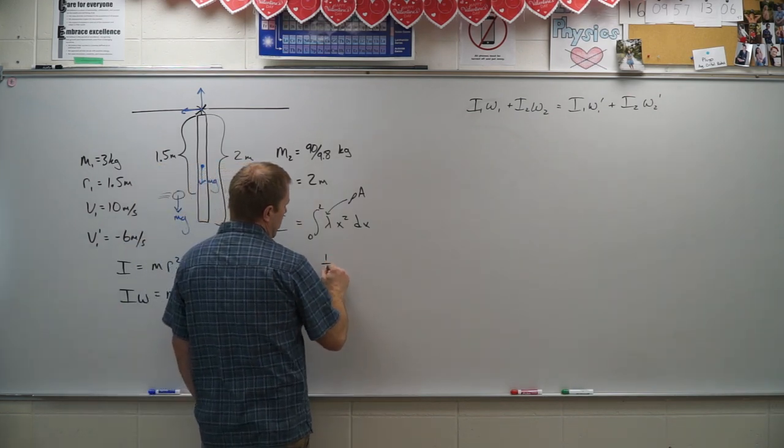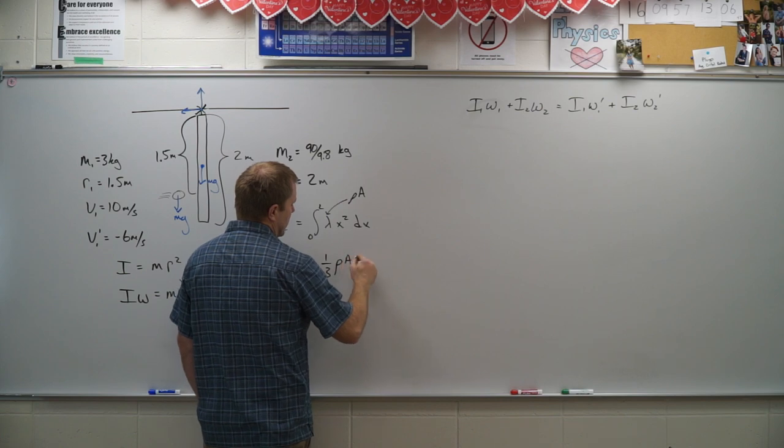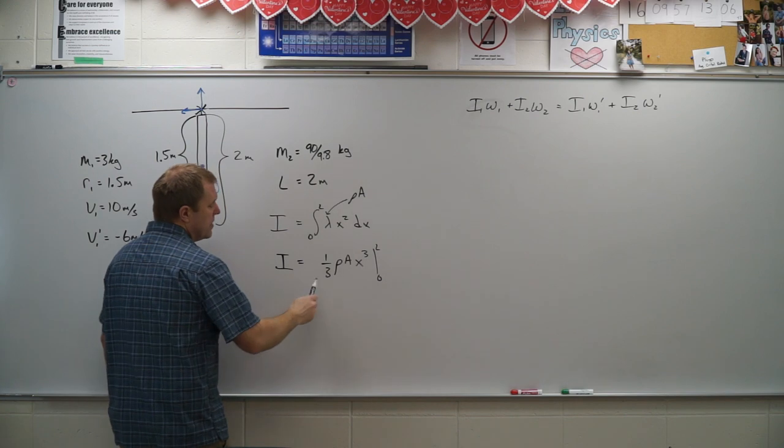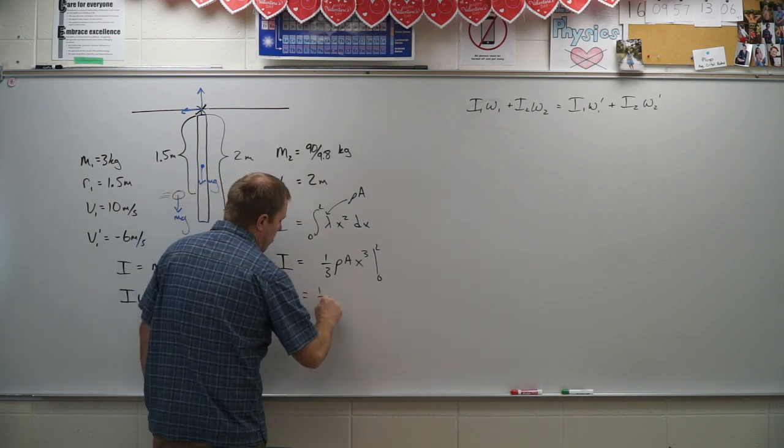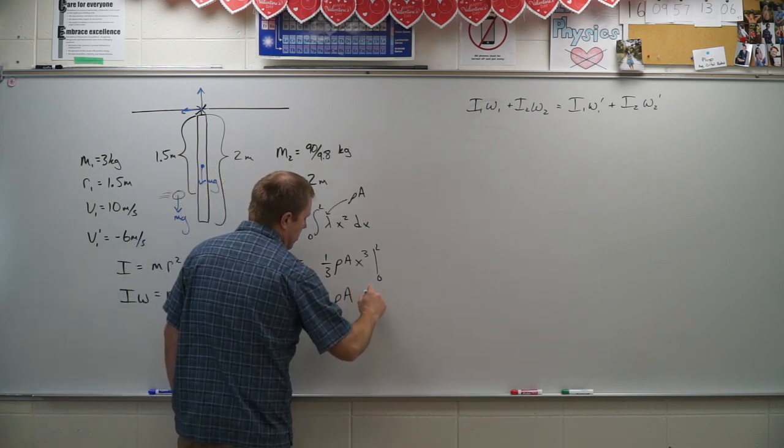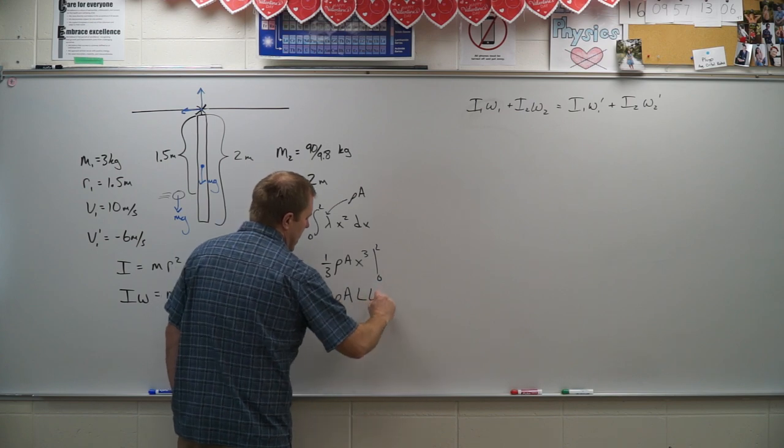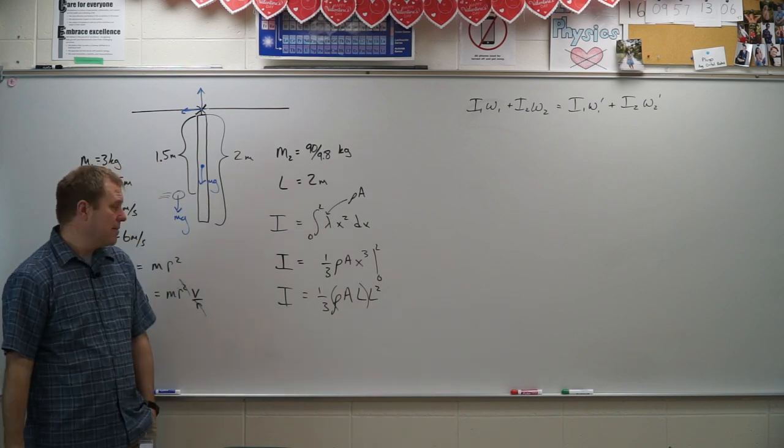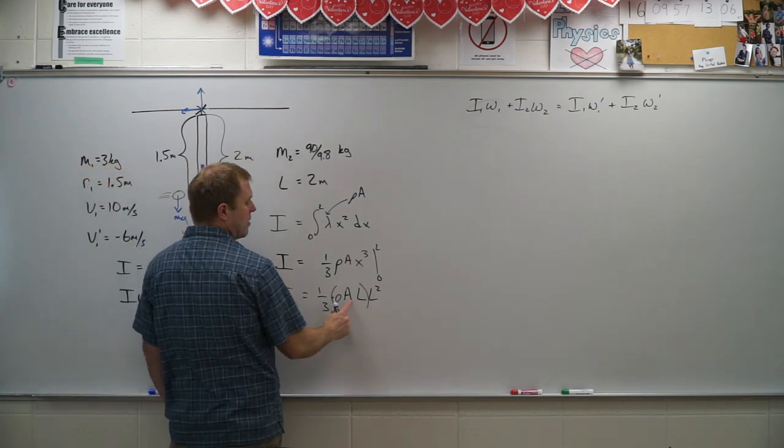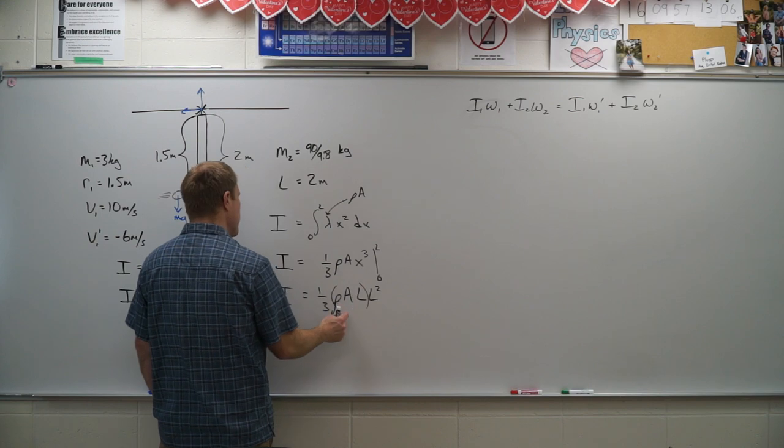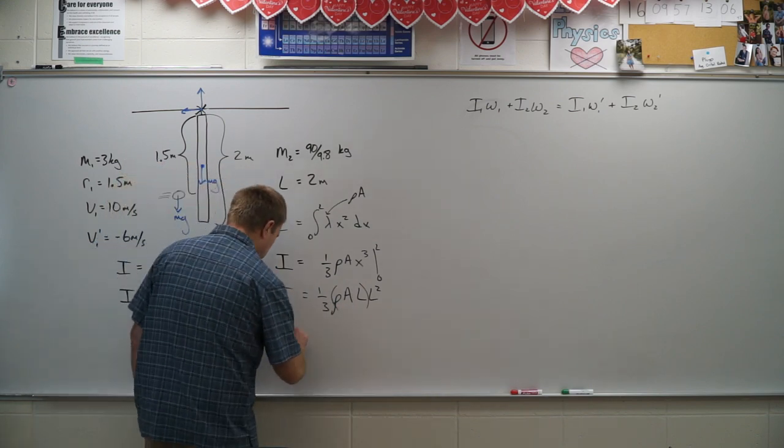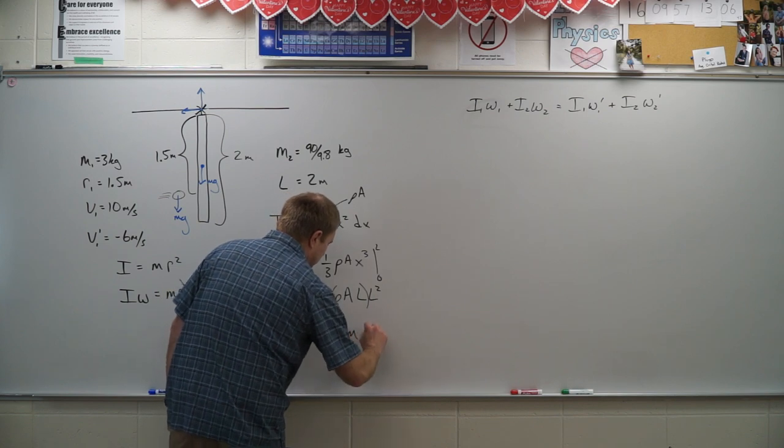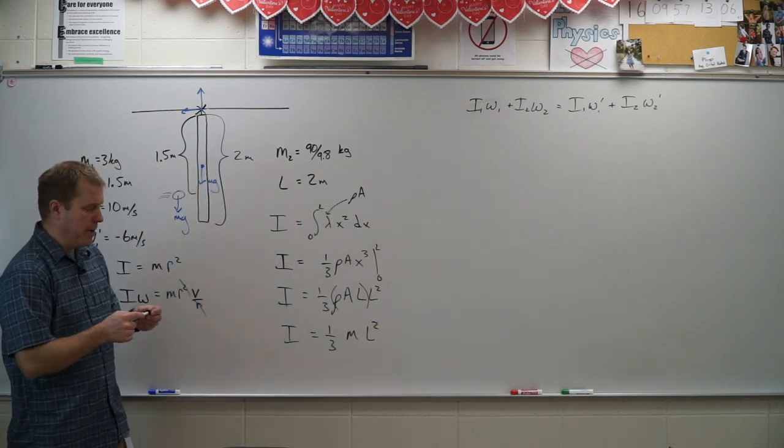And so we end up with one third density cross-sectional area X cubed evaluated from zero to L. This then becomes my one third density cross-sectional area L cubed. Instead of writing L cubed, I'm going to write L times L squared. That's because then I can do this density times cross-sectional area times length. Cross-sectional area times length gives me volume. Volume times density gives me mass. And we're always looking for that so we can substitute in mass. And so there's my moment of inertia for this bar about the end.